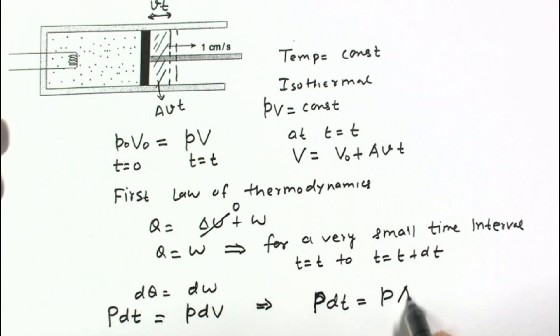dV we can write as the small change in volume, and this small change in volume is area of piston multiplied by distance moved by the piston. This dT will cancel and this power P equals,